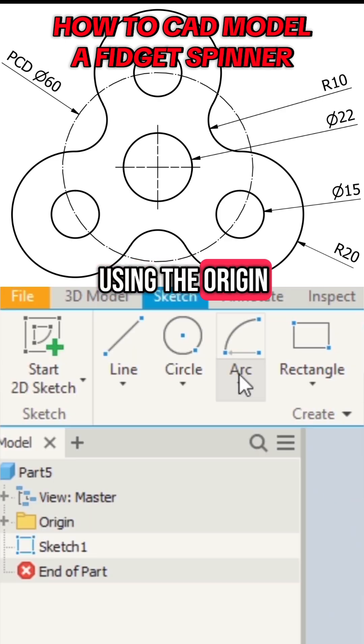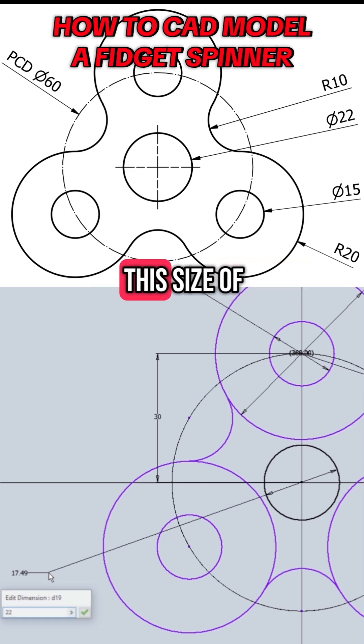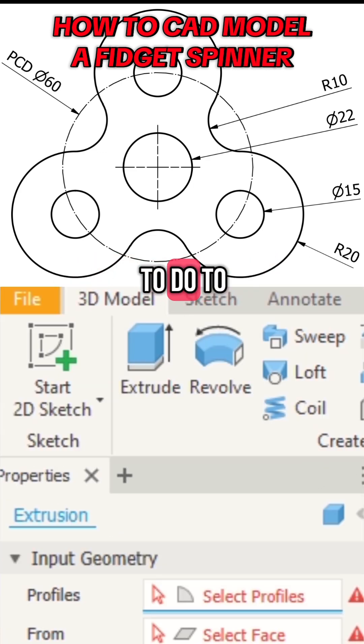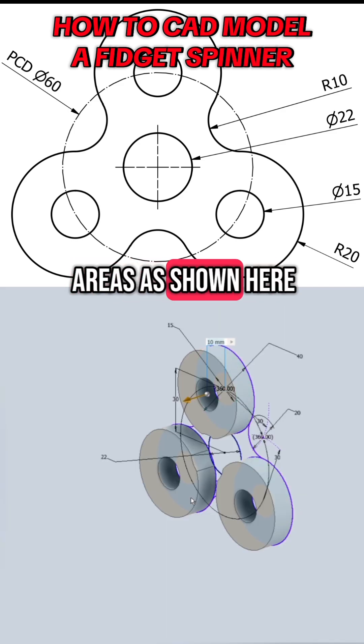Using the origin, sketch another circle that measures 22 millimeters in diameter. This size of hole will fit a standard skateboard bearing. All you need to do to finish off is finish sketch and then extrude all solid areas as shown here.